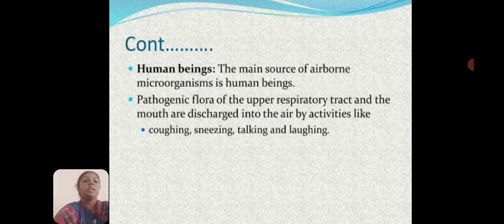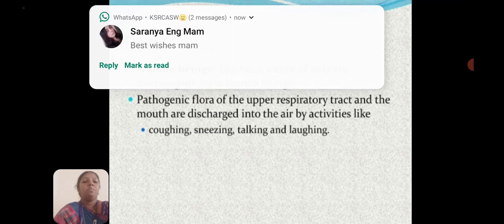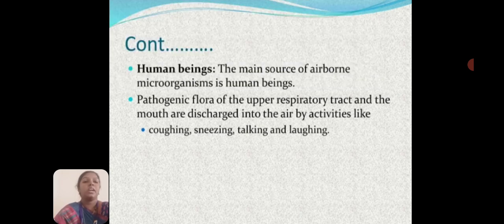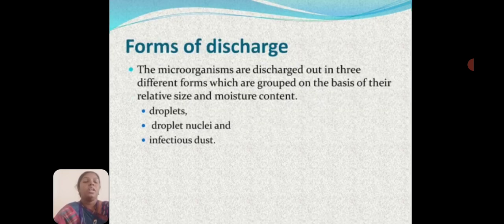The main source of airborne microorganisms is human beings. The pathogenic flora of the upper respiratory tract and mouth are discharged into the air by activities like coughing, sneezing, talking, and laughing. Microorganisms are discharged in three different forms grouped on the basis of their relative size and moisture content: droplets, droplet nuclei, and infectious dust.